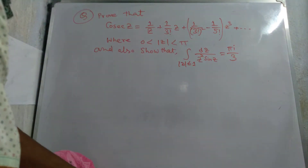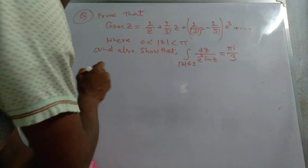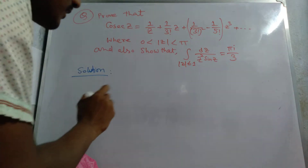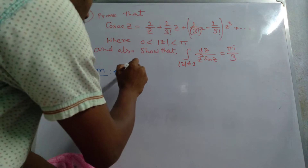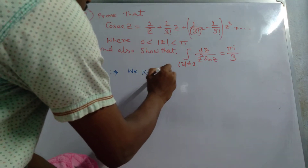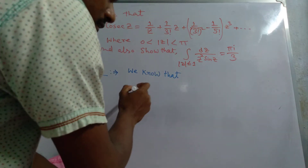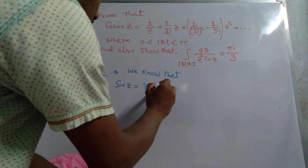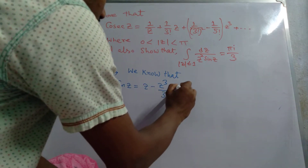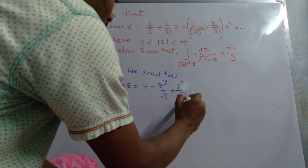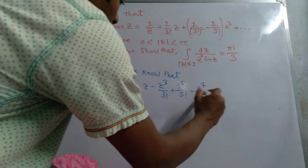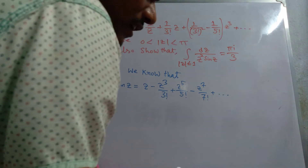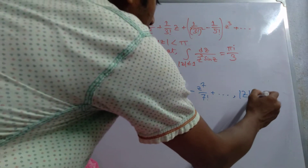First, we write the solution of these questions. We know that sin z equals z minus z³/3! plus z⁵/5! minus z⁷/7! plus dot dot dot, valid for |z| < ∞.